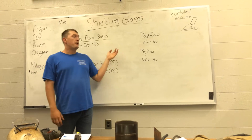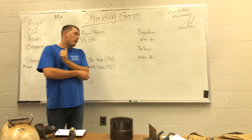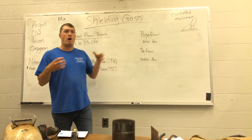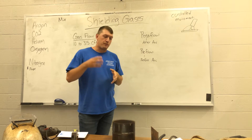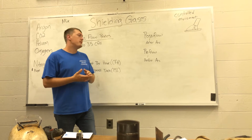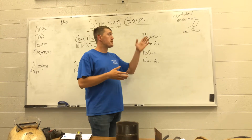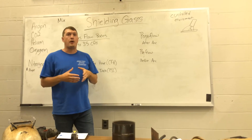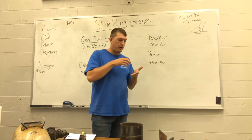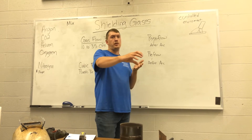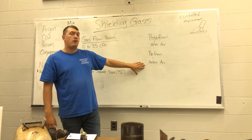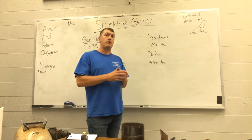We also have something called post-flow and pre-flow. The pre-flow is how long it lets gas come out at the gas flow rate before the arc is established. So before we strike up on that metal, that's how much gas is going to come out. Why would we need that? The reason is to protect our tungsten if we're TIG welding, and it also protects our wire when we're MIG welding, and it keeps that controlled environment started before we actually create an arc. That way we don't start a weld with impurities — we already have everything shielded before we start.